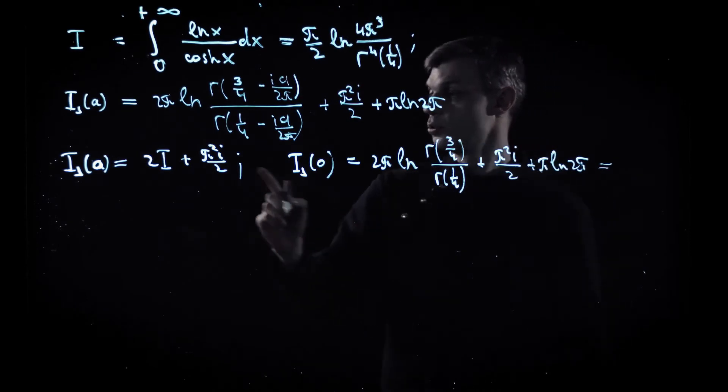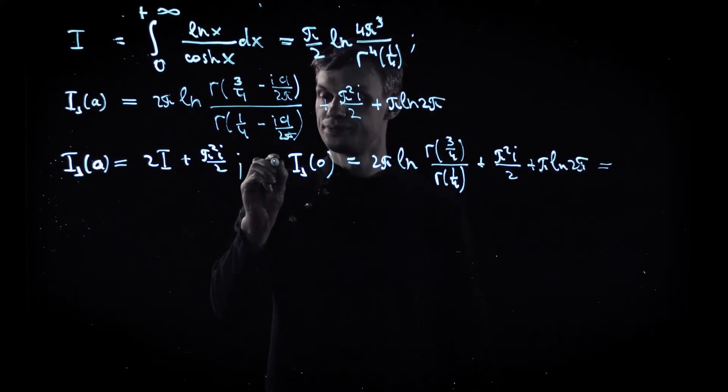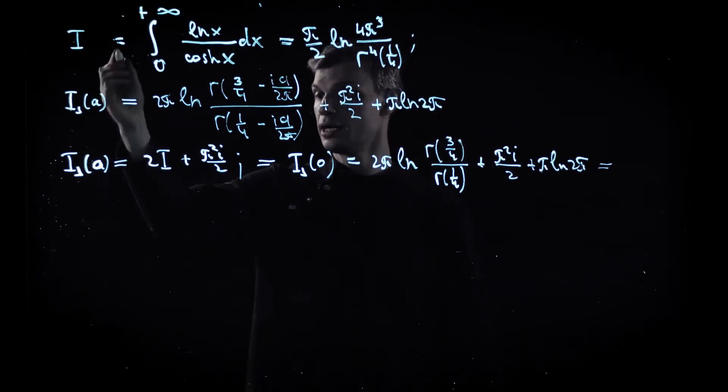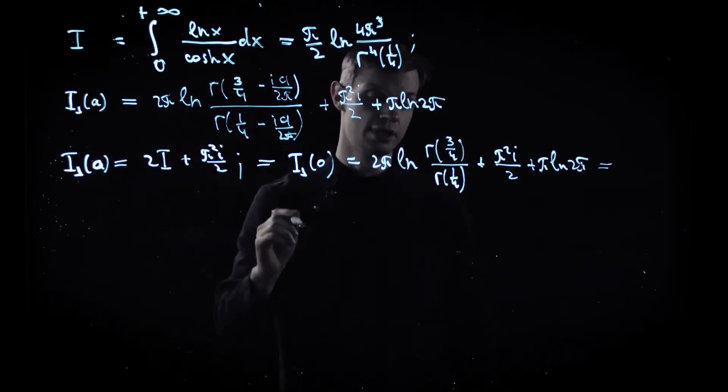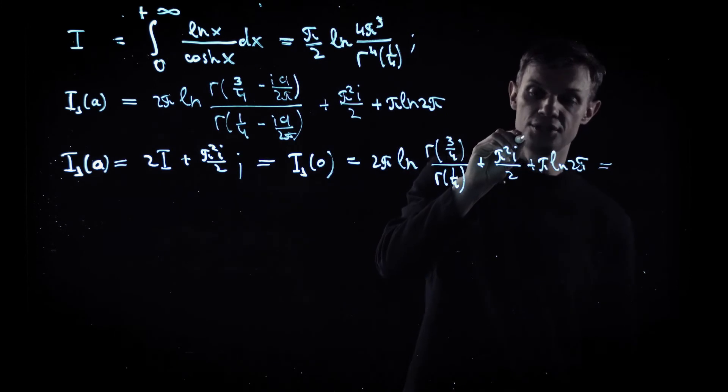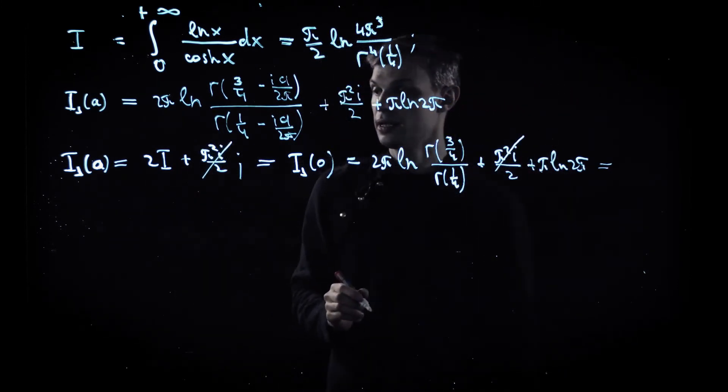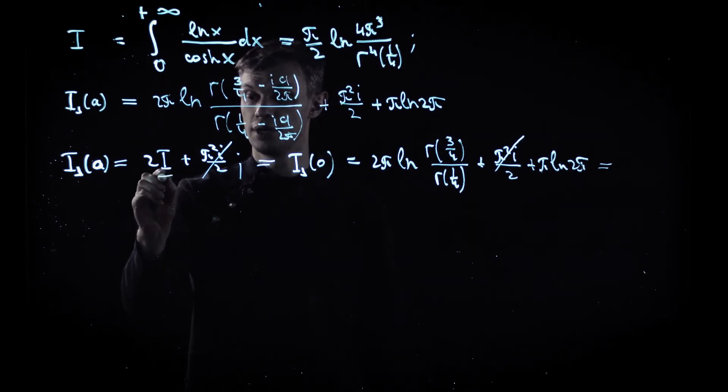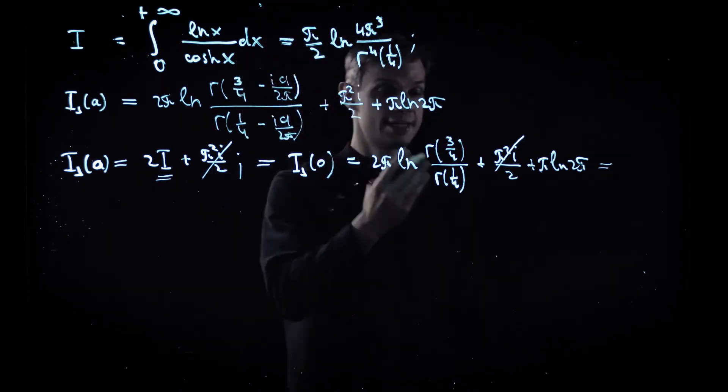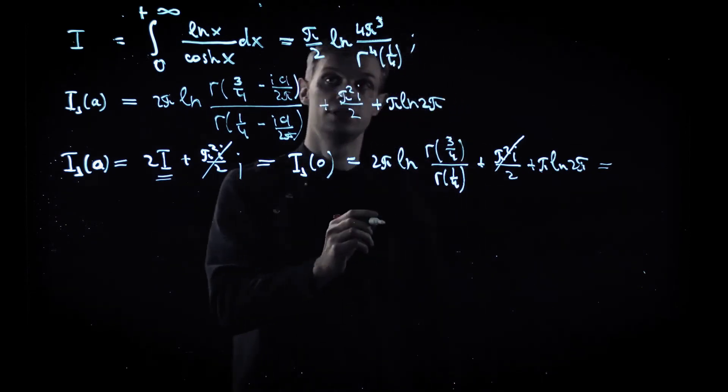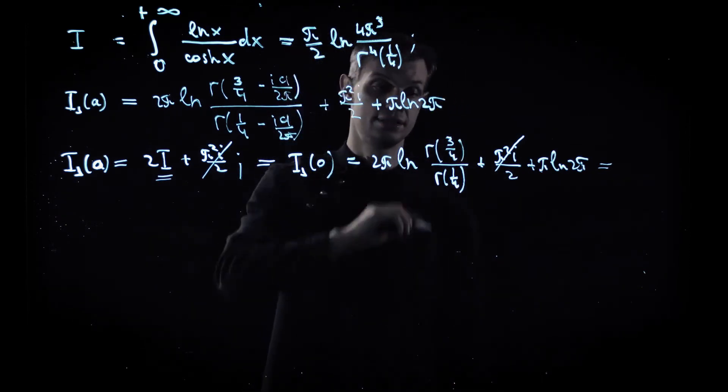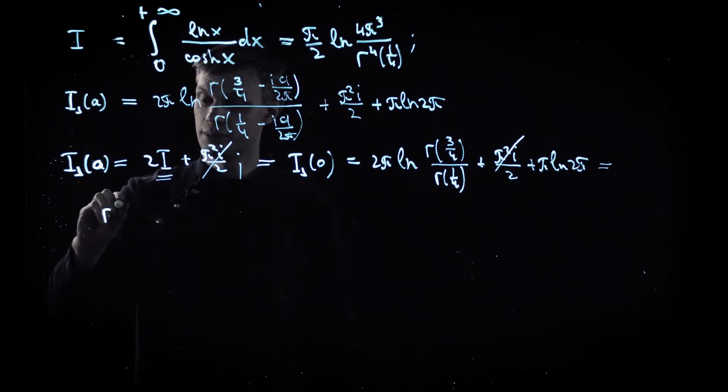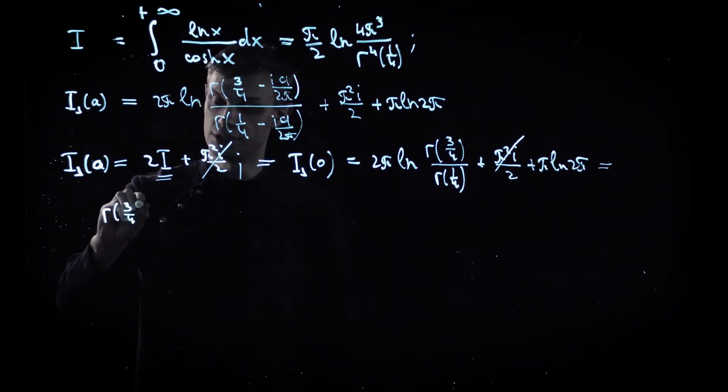And this expression should be equal to the original integral, which is just two i plus pi squared i over two. And as we see, this imaginary part is canceled, and we recover the expression for the original integral. And one last step you should do to get the answer: you just use the mirror formula for Euler's gamma function.